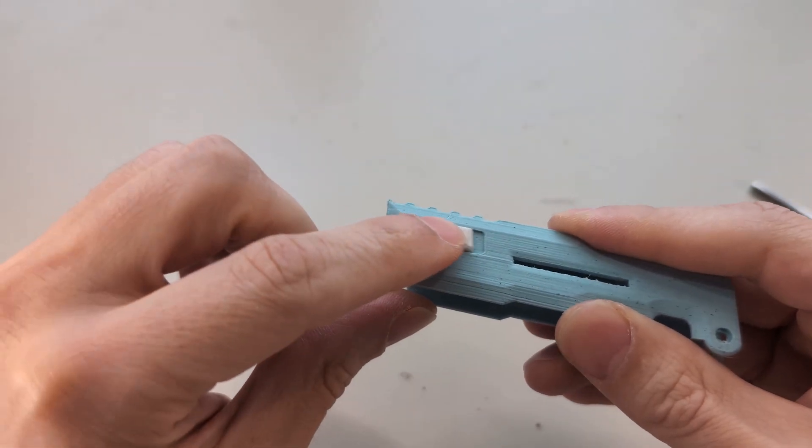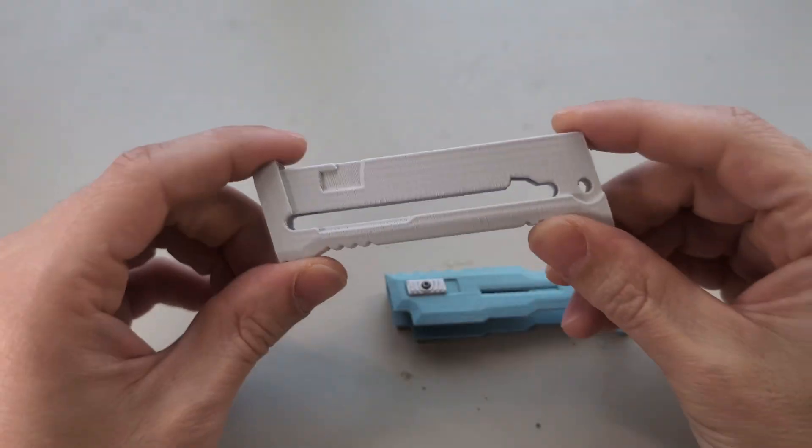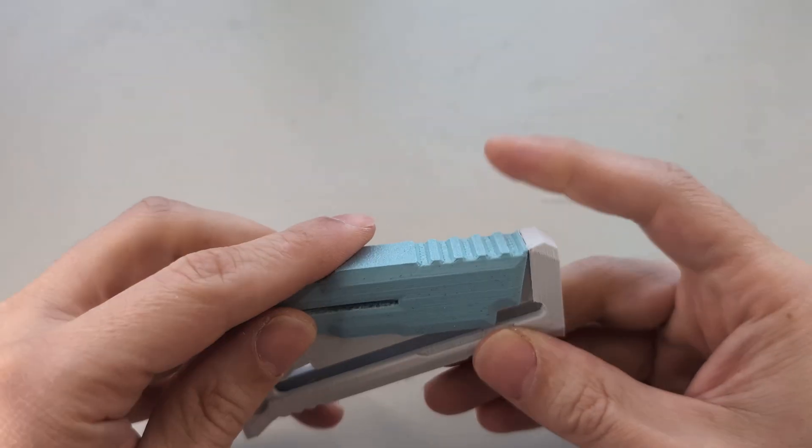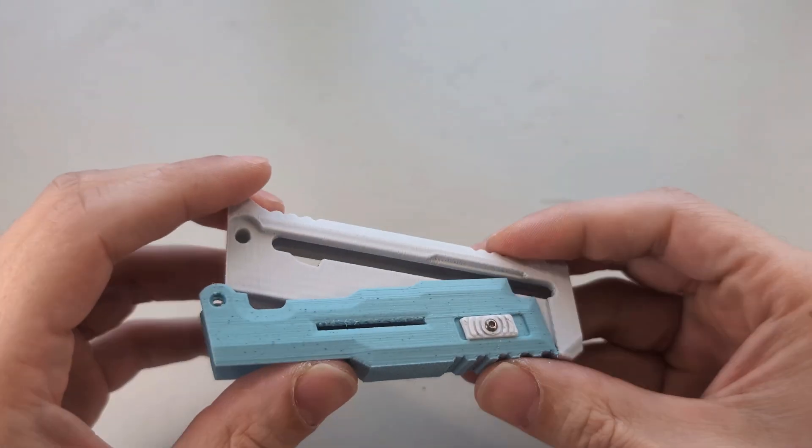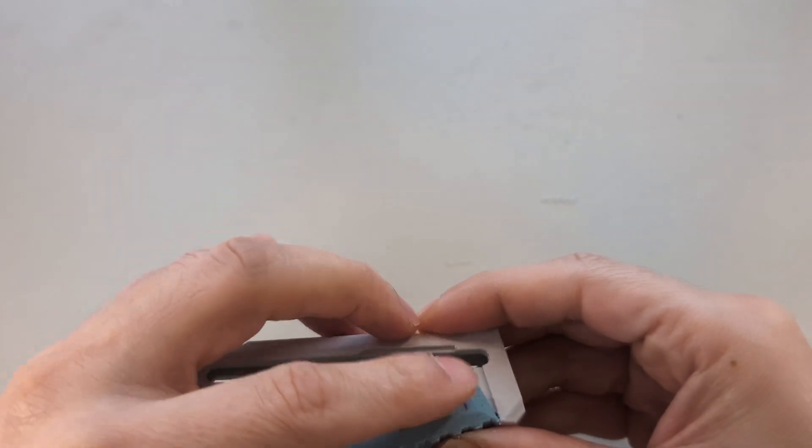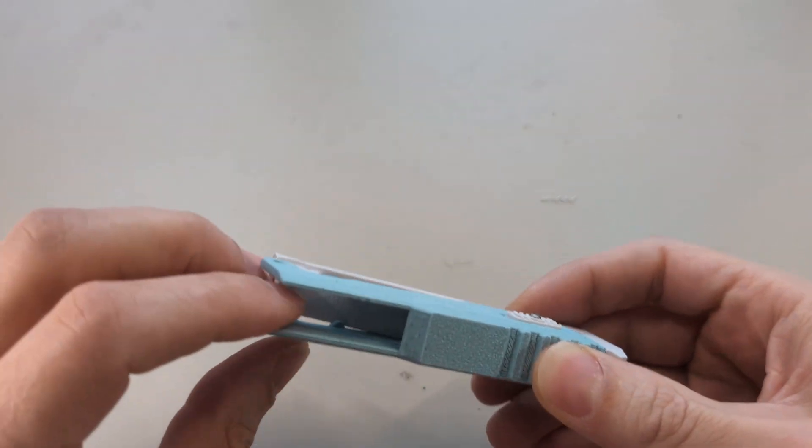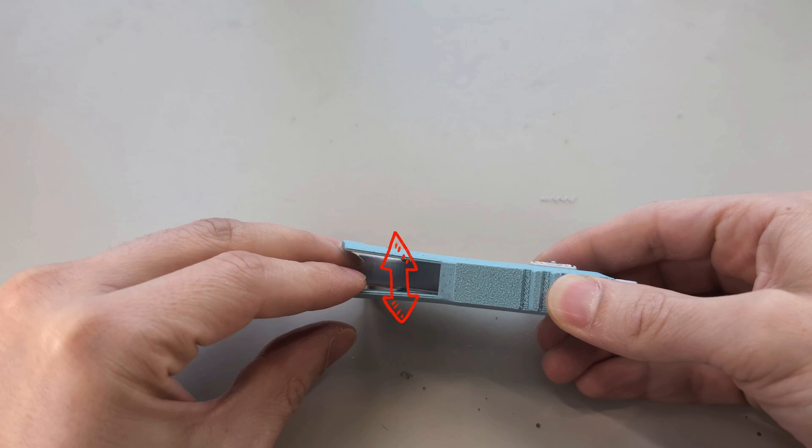Now we can add the inner handle to it. The easiest way to do this is to put it on like this. Bring the slider you have just attached into the right position, and then spread the ends back here with your fingers and press the two parts lightly into each other.